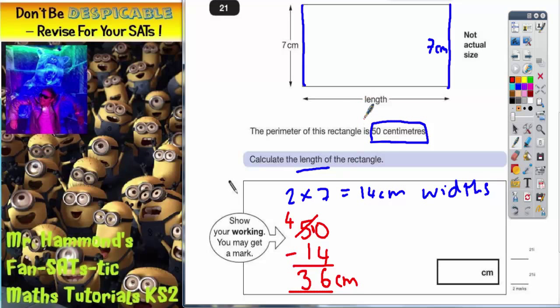But remember, this is two lengths making the 36. And the two lengths must be equal. So which two numbers, which are both equal, make 36? Easiest way of doing that is just to half 36. Split 36 into 2. Divide 36 by 2.